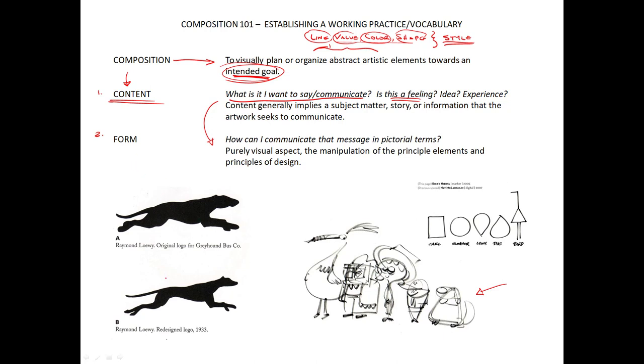Here's a couple examples. This is Raymond Lowy's design, the bottom left, for the Greyhound bus. I think it's a great example of a successful resolution of content and form, and then an unsuccessful one. If we were all in class together, I would ask you what you think of the top and the bottom, and which one is more appropriate for Greyhound. But we could tackle it this way too.